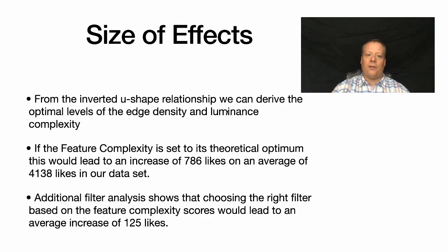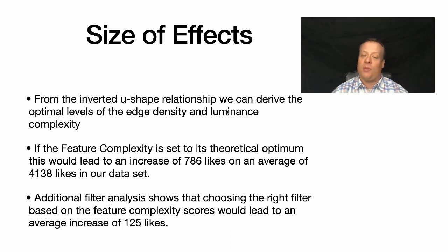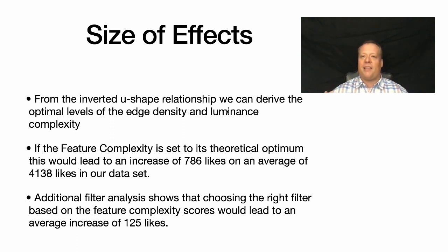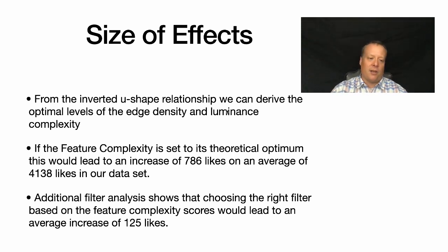From the U-shaped relationship we can derive the optimal level of edge density and luminance complexity for an image. Setting feature complexity to its theoretical optimum would lead to an increase of 786 likes on an average of 4,000 likes observed in the dataset — a substantial increase in engagement. We also found that applying the best Instagram filter to an image gives around an increase of 125 likes, so a single button press yields 125 likes.